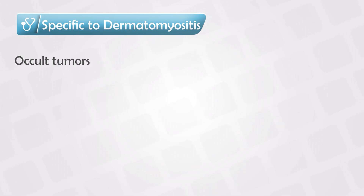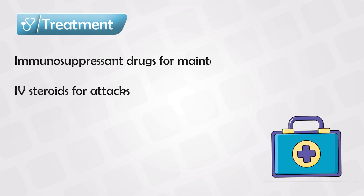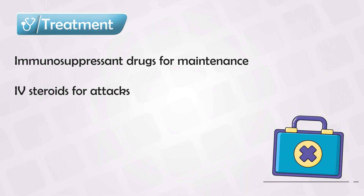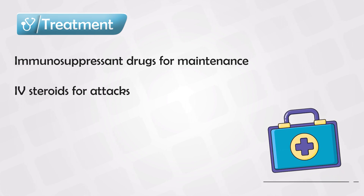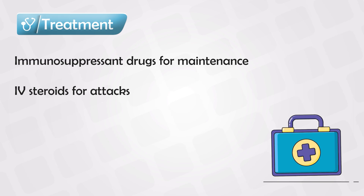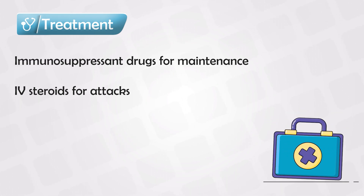It can also be associated with extra-muscular symptoms such as interstitial lung disease, vasculitis, or myocarditis. In any case, the treatment for polymyositis and dermatomyositis are very similar. Once the patient has an acute attack, we use IV steroids, and for long-term treatment, the patient has to be put on immunosuppressant therapy, like methotrexate for example.